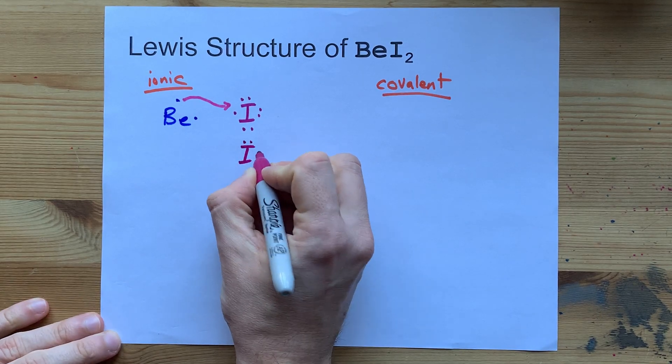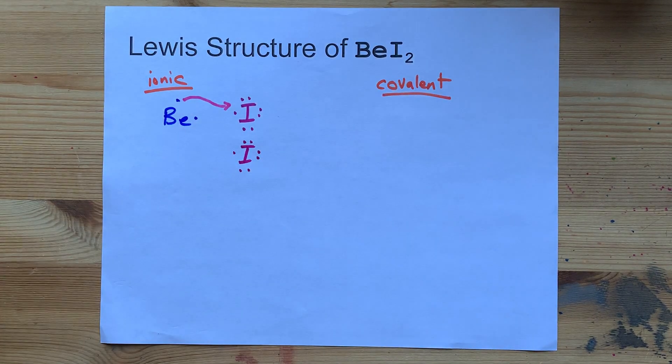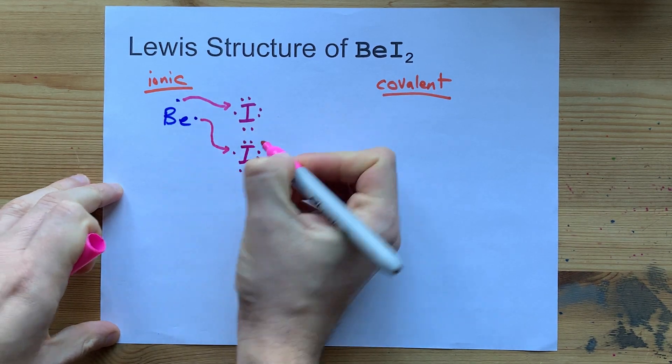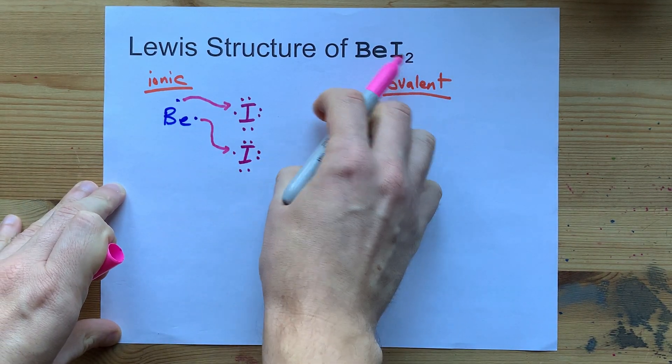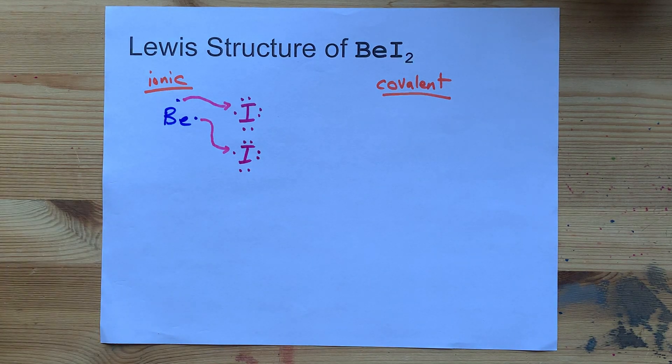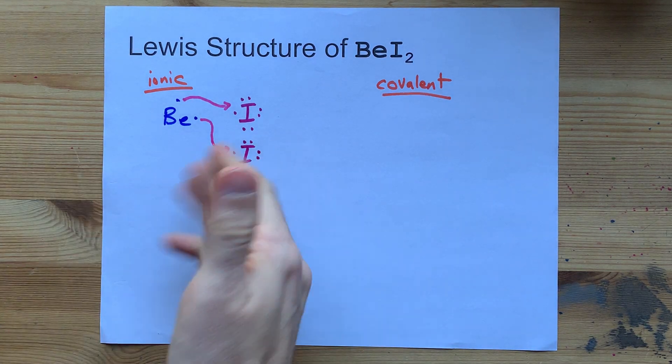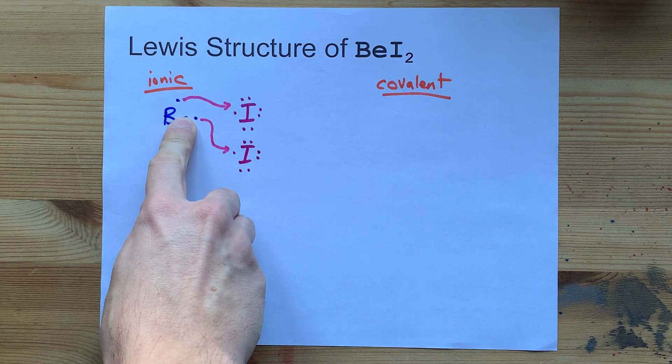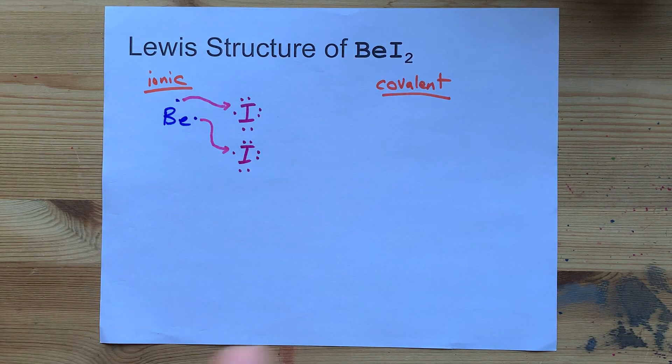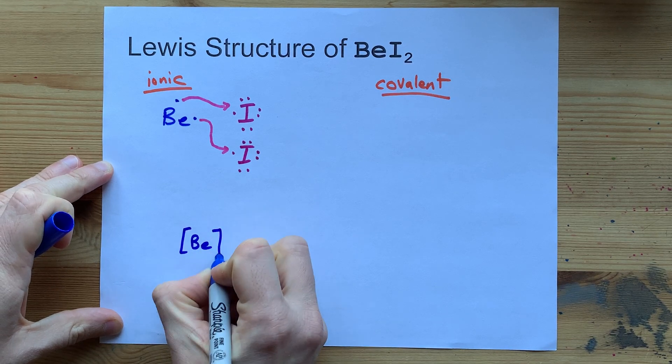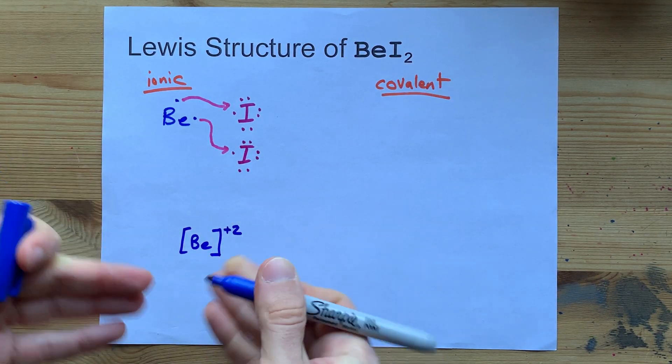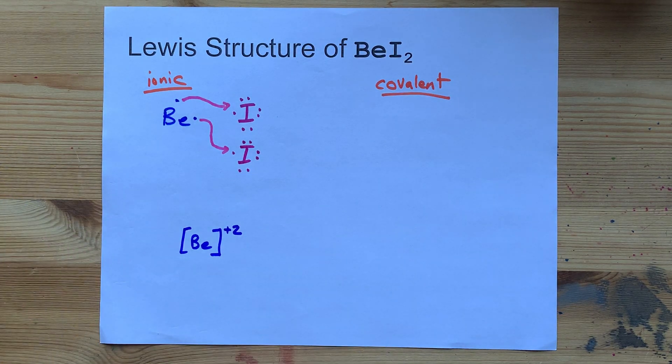Where does it go? Spoiler alert, another iodine comes in, and beryllium can donate its last electron there. That's why you need 2 iodines to react with 1 beryllium. Beryllium had 2 valence electrons and gave them both away. So it has no valence electrons left and has a charge of plus 2, which represents the loss of 2 electrons.